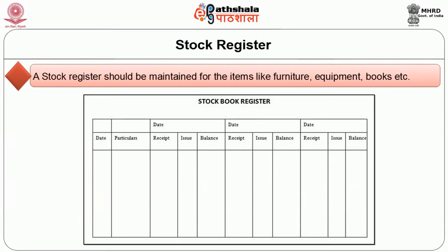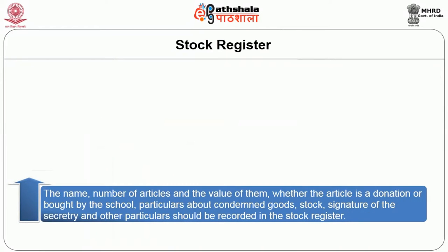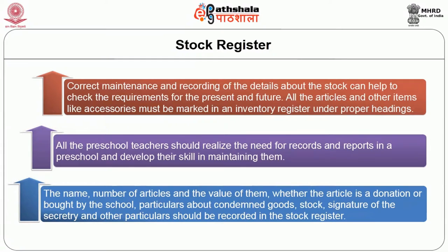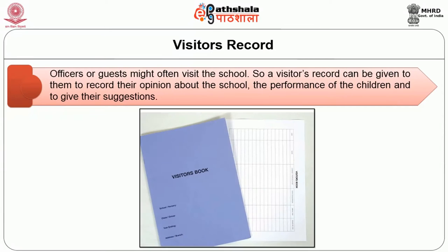A Stock Register should be maintained in a nursery school to know whether an article is a donation or bought by the school. The particulars about condemned goods, the stock, the signature of the secretary and other particulars should all be recorded. Correct maintenance and recording of stock details can help to check the requirements for the present and the future. All articles must be marked in an inventory register under proper headings. Visitors such as officers or guests who visit the nursery school and give suggestions should have all details recorded in the Visitors Record.